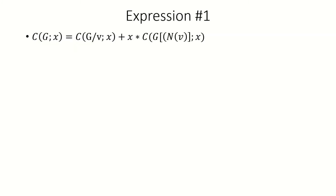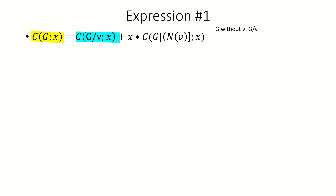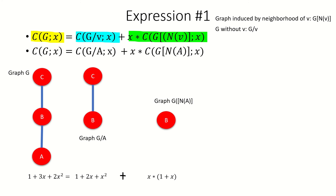We are now ready to examine two powerful equations involving clique polynomials. The first equation states that the clique polynomial of a graph g evaluated at x equals the clique polynomial evaluated at x of the subgraph induced by every vertex except for an arbitrary vertex v, plus x times the clique polynomial evaluated at x of the subgraph induced by the neighborhood of our arbitrary vertex v. This equality holds for all x and for any vertex v in any graph g. In this example, our arbitrary vertex v is vertex a, and the clique polynomial of the entire graph g equals the clique polynomial of the subgraph induced by vertices b and c, plus x times the clique polynomial of the subgraph induced by the neighborhood of a.